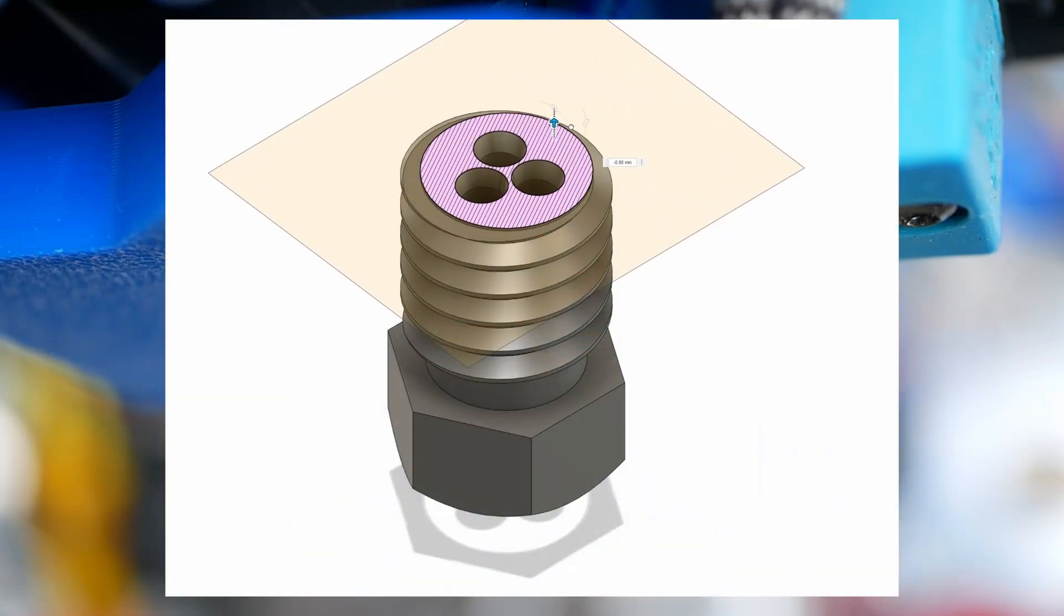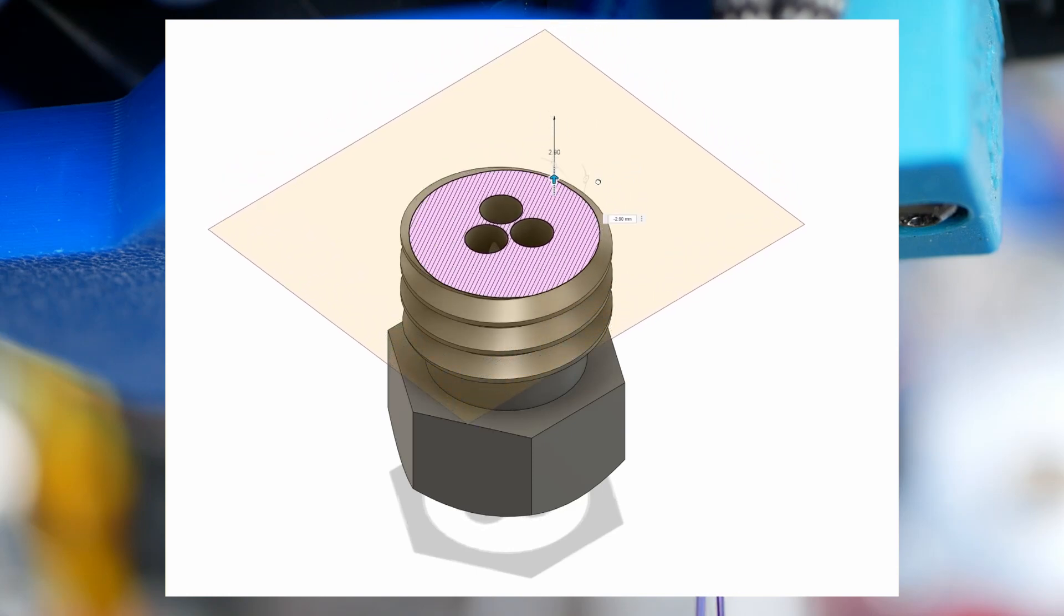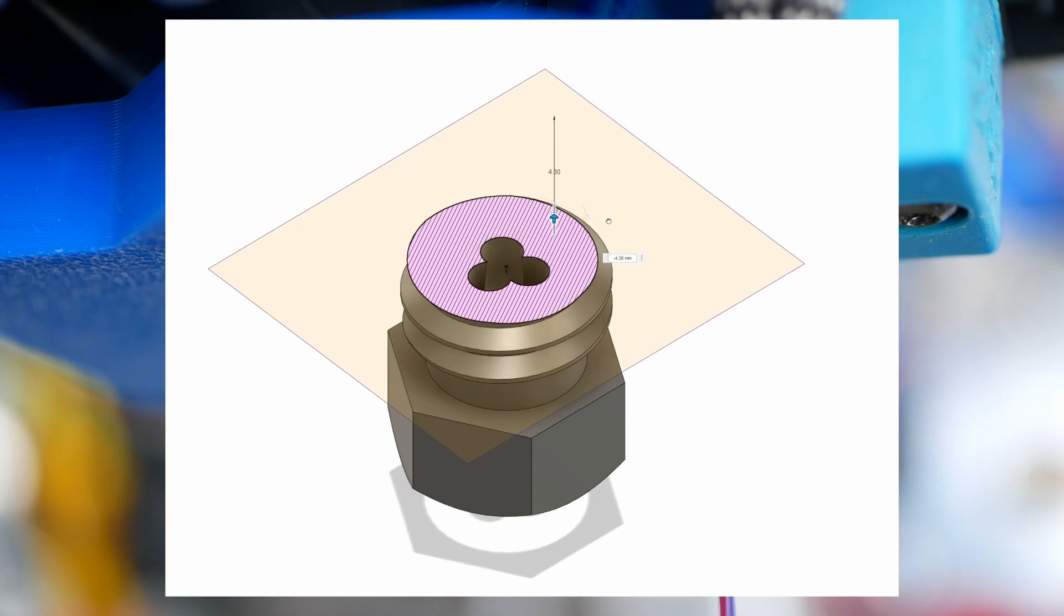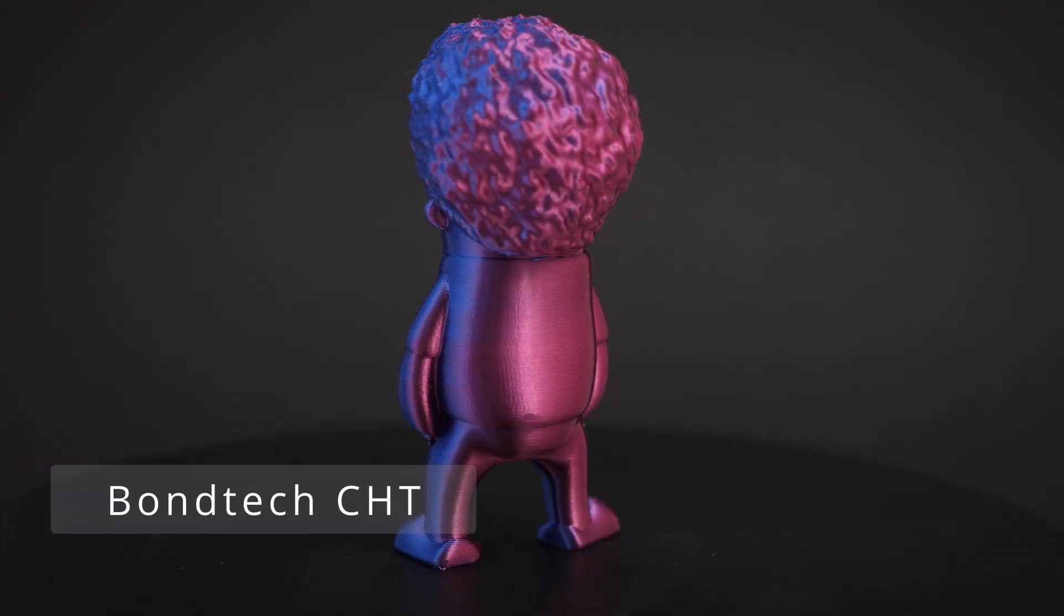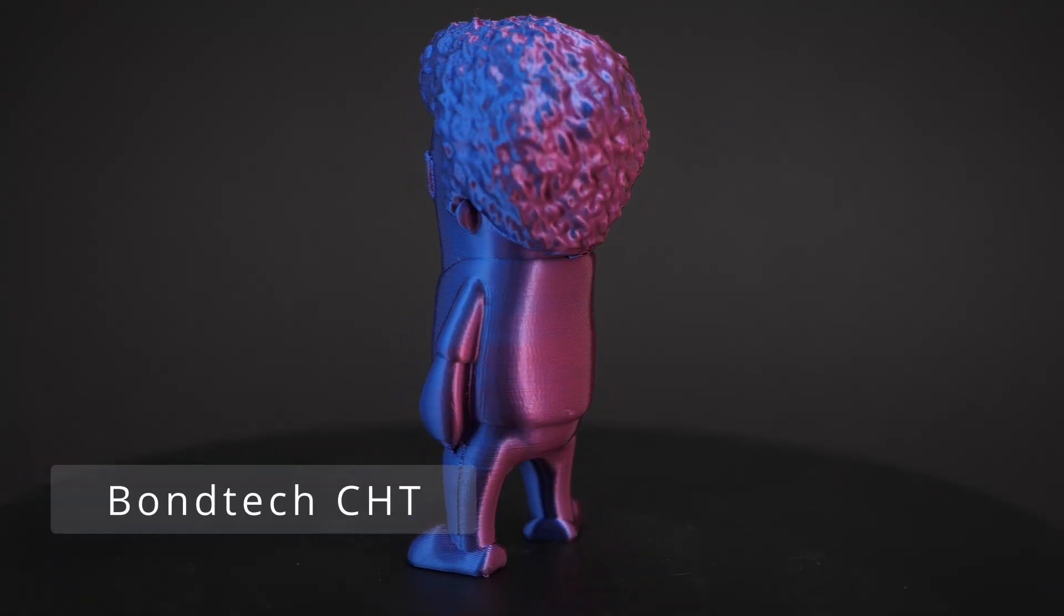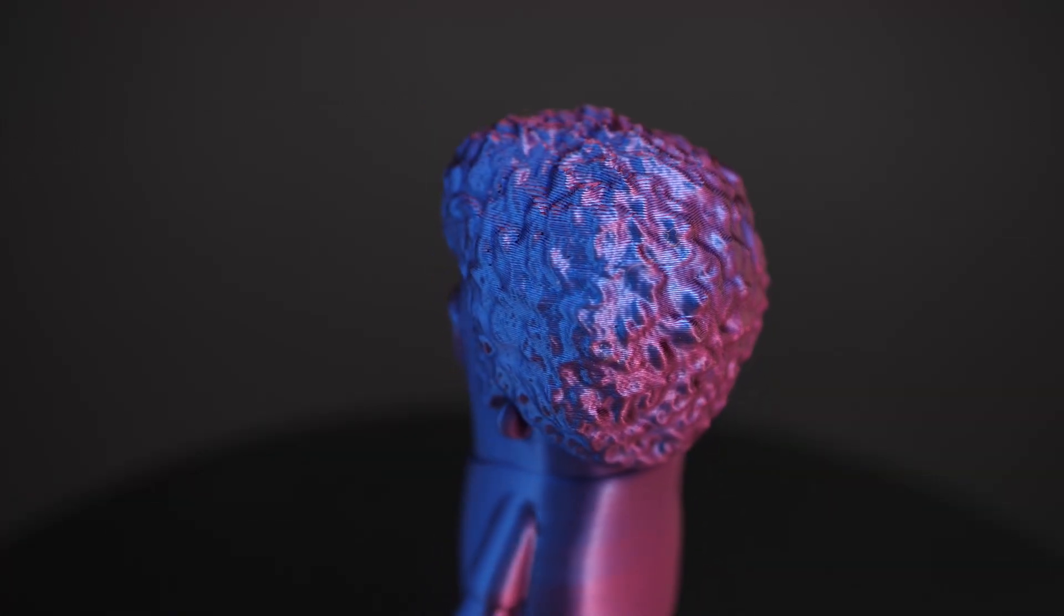With Bondtech's CHT nozzle, the filament gets sliced into three individual strands by the blade-like structure, then travels through the channels and meets up again before the tip. I couldn't spot any mixing in the purge material. The final model looked indistinguishable to the reference, which means the flow is still really laminar with basically no turbulence.